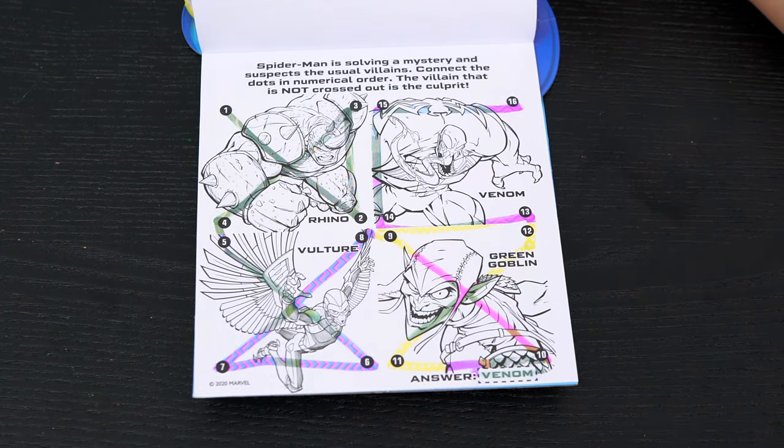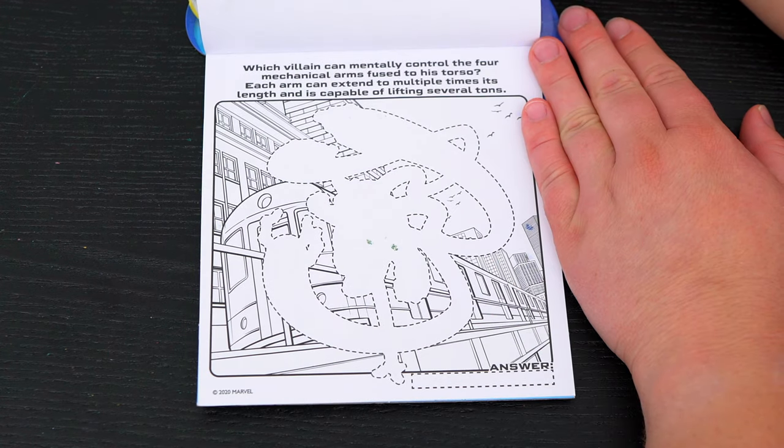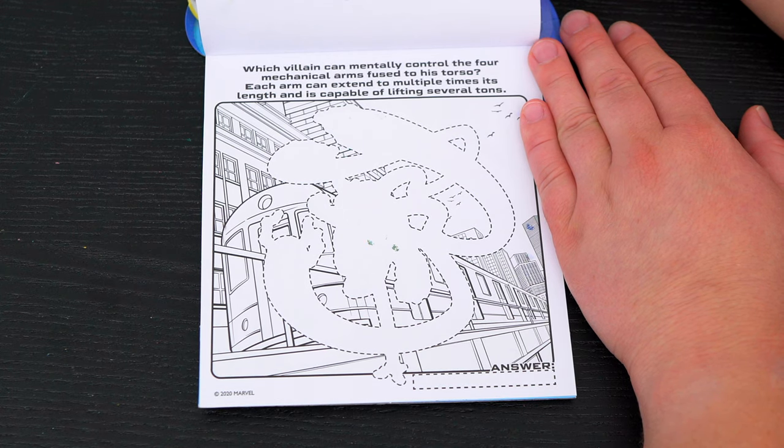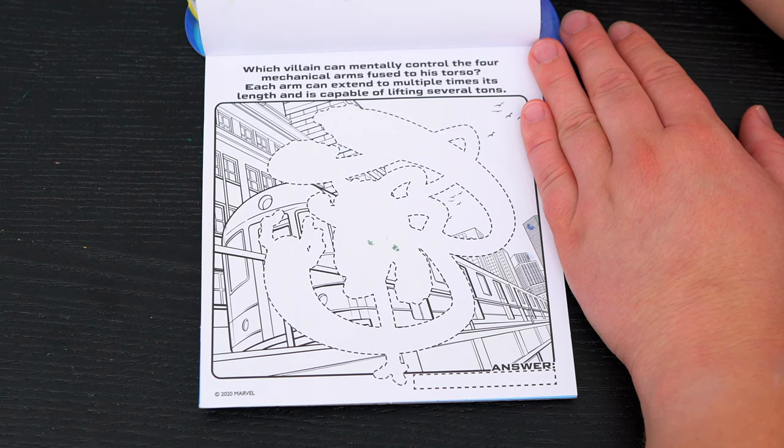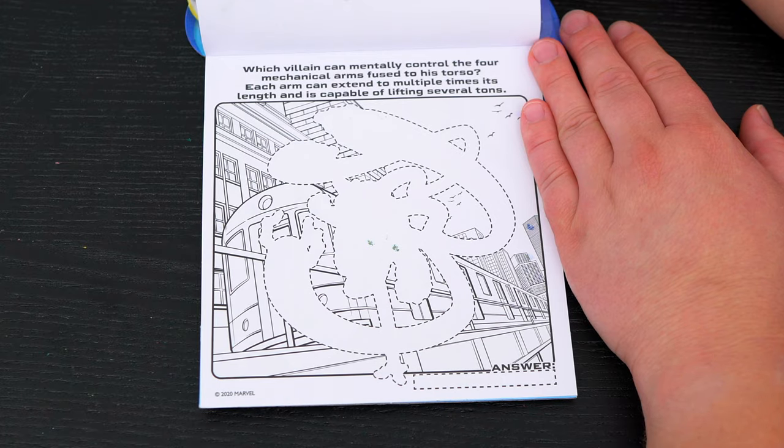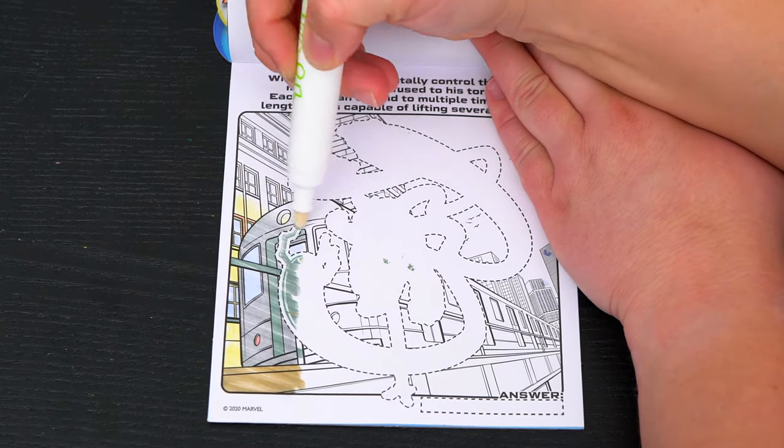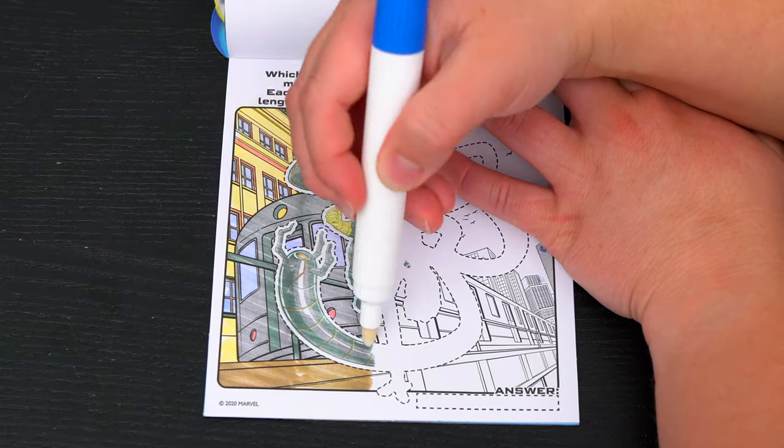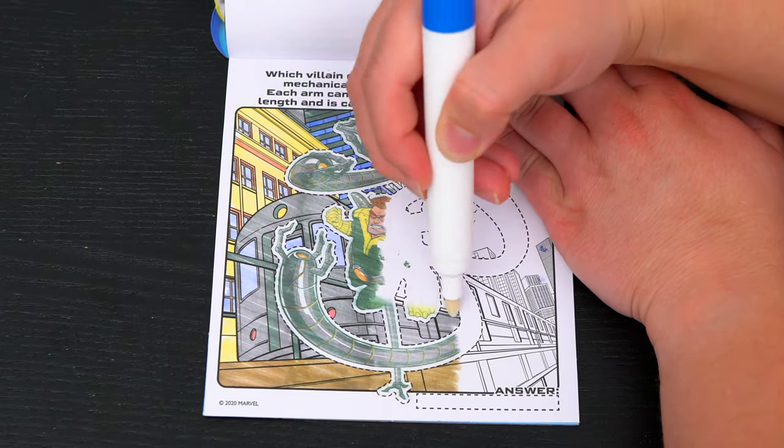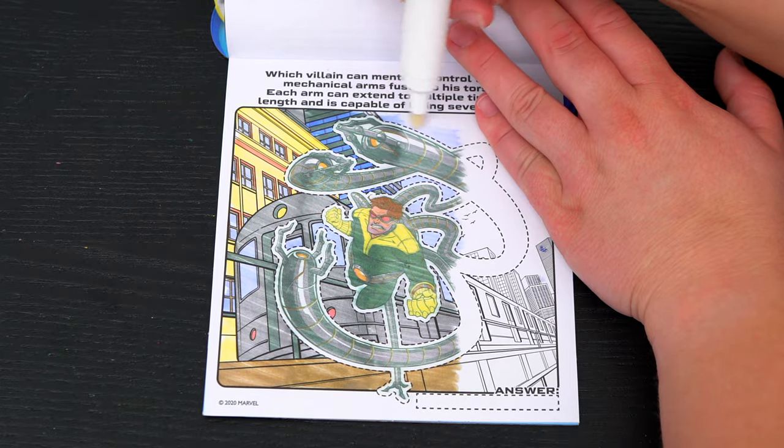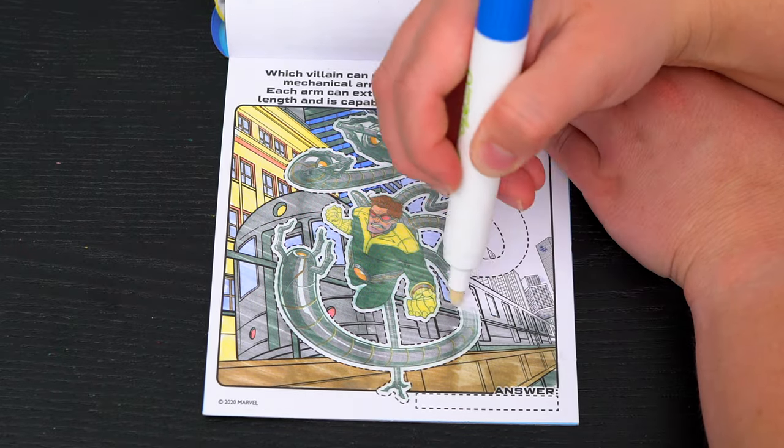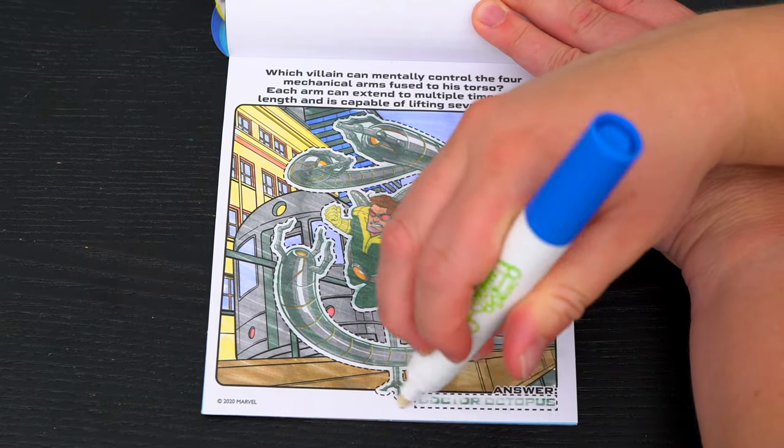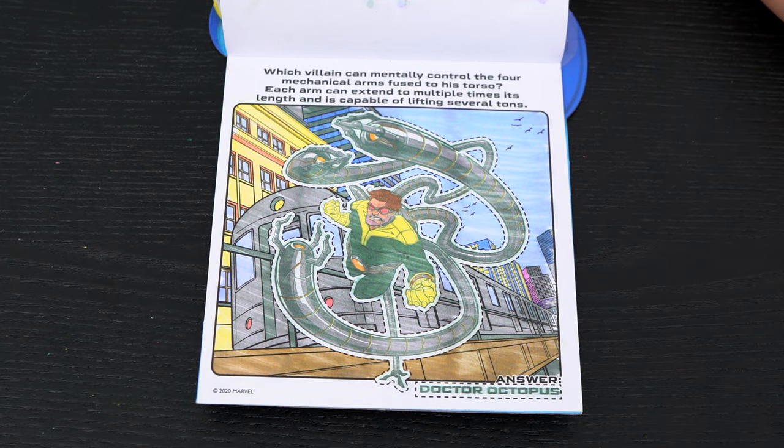Which villain can mentally control the four mechanical arms fused to his torso? Each arm can extend to multiple times its length and is capable of lifting several tons. It's Doctor Octopus!